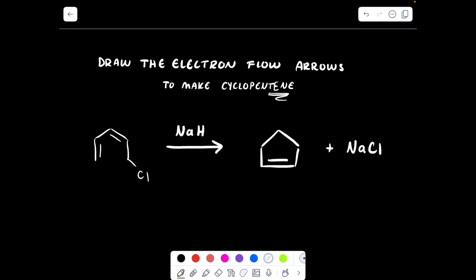All right guys, question number two asks draw the electron flow arrows to make cyclopentene. So they give us a product, so we must achieve this product through arrow pushing. We have NaH as our reagent. We know Na is going to be a counter ion, so positively charged, that will make H minus and nucleophilic.